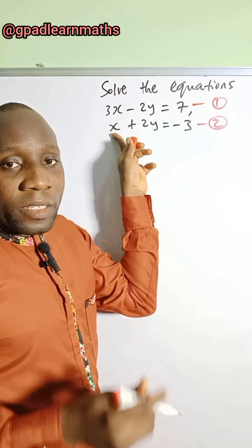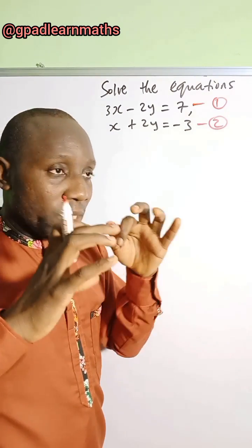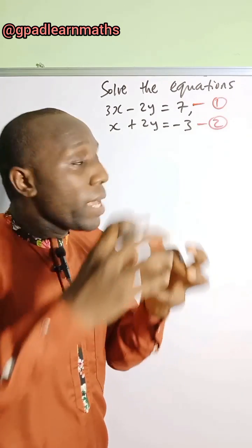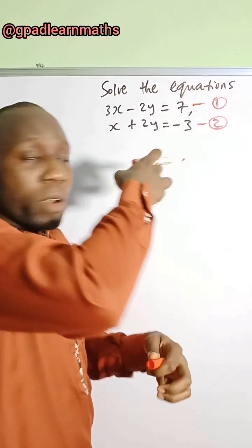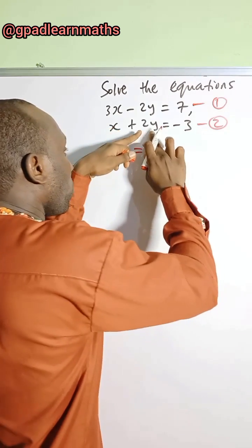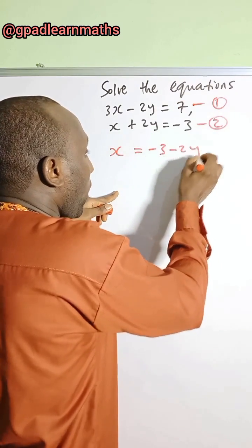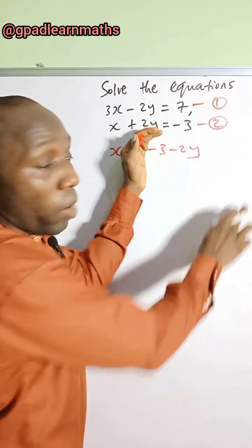Let's make x the subject of the formula in equation 2. And then whatever we have, we're going to have an expression in y. Put it back into equation 1. x is now equal to, move plus 2y to the right hand side, you have minus 3 minus 2y. Now, this is the expression in y that I talked about.